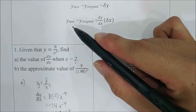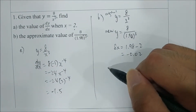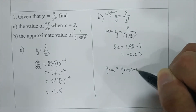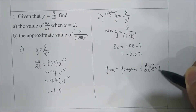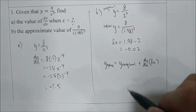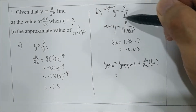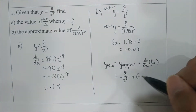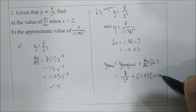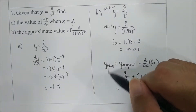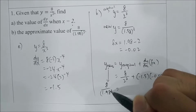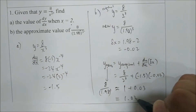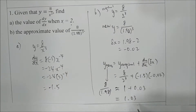Using the formula, the new y equals the original y plus dy/dx times sigma x. The original y is 8 over 2 to the power of 3, dy/dx is the value just calculated, and sigma x is negative 0.02. Calculating this gives the approximate value of 8 over 1.98 cubed. You can use a calculator to verify the result.